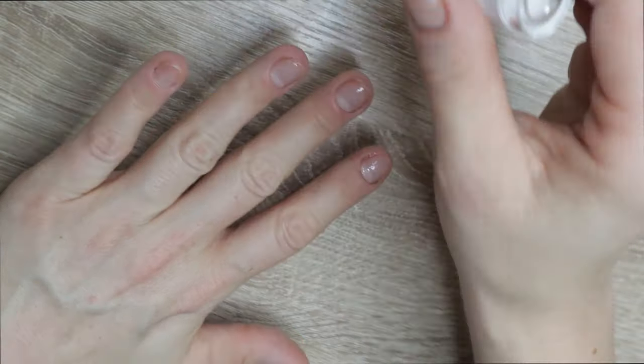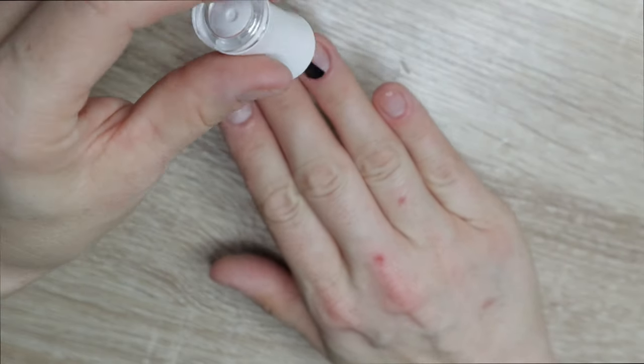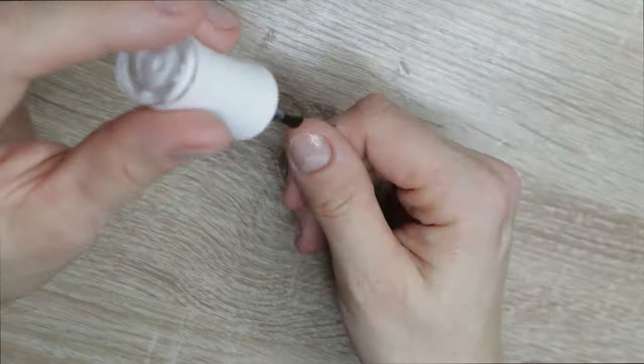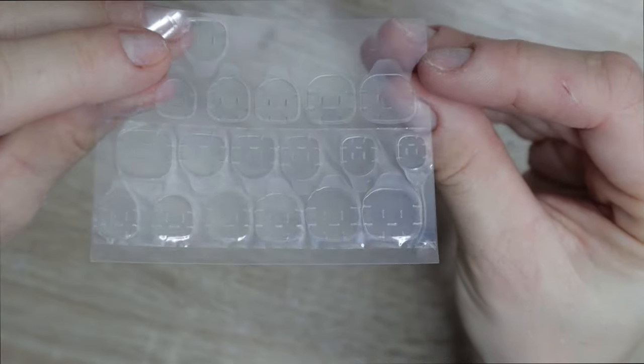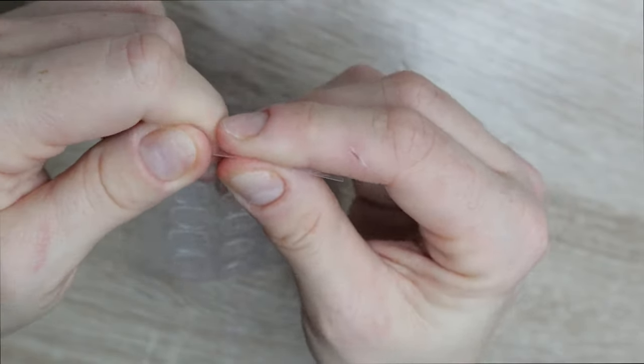Right now I'm applying nail dehydrator to all of my nails. It's just an extra step, it's like rubbing alcohol, just getting all the oils gone. Now just like I always do with all of my press-on nails, I use sticky tabs.